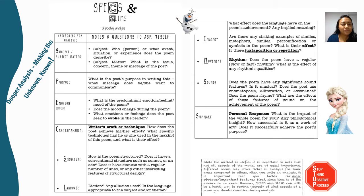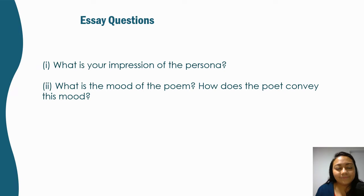The title emphasizes the persona's desire to venture out of her comfort zone. The overall mood of the poem is mysterious yet exciting. This is a framework you can use to help you have a deeper analysis — I call this SPECS and SLIMS. Pause this video and use this framework to analyze any poem and I promise your understanding will be much clearer. Basically we look out for subject matter, the purpose, the emotion, and then the writer's craft — which consists of structure, language, imagery, movement, and sounds. This is very important, especially for the second part of the essay where the question asks you to talk about writer's craft.